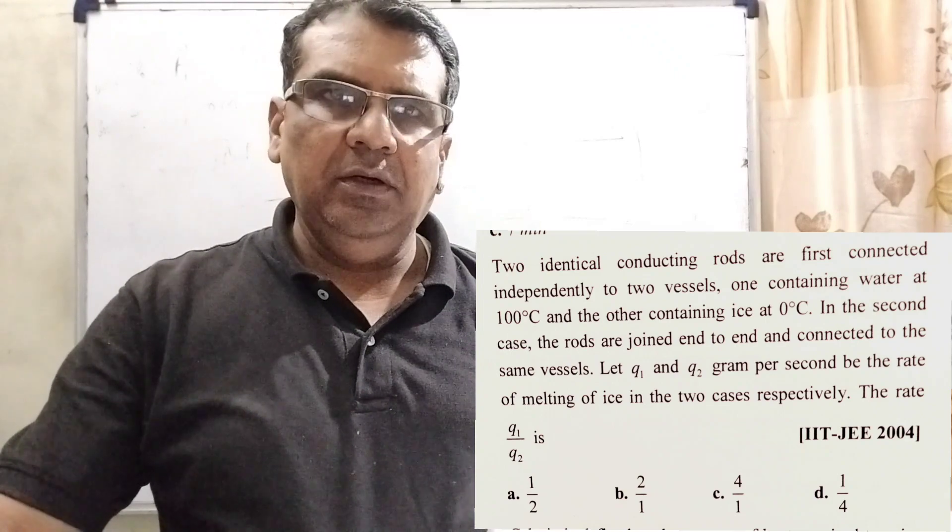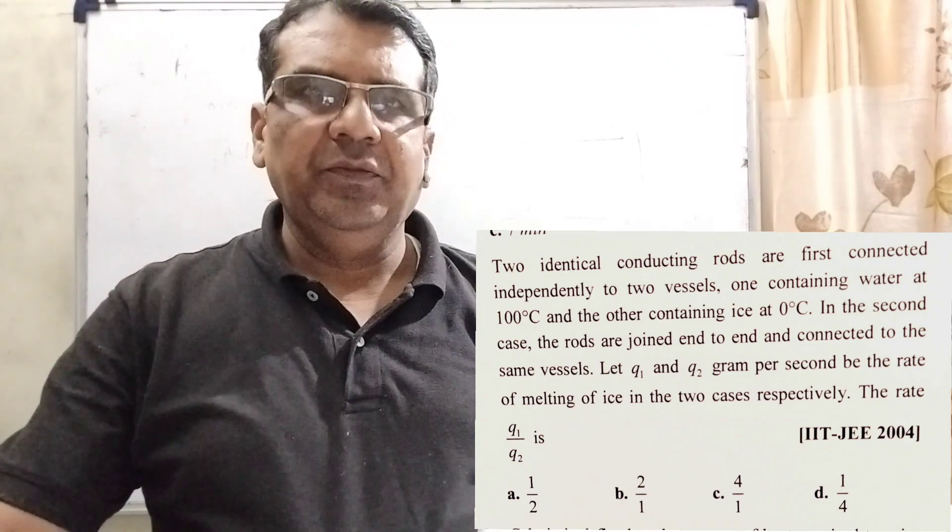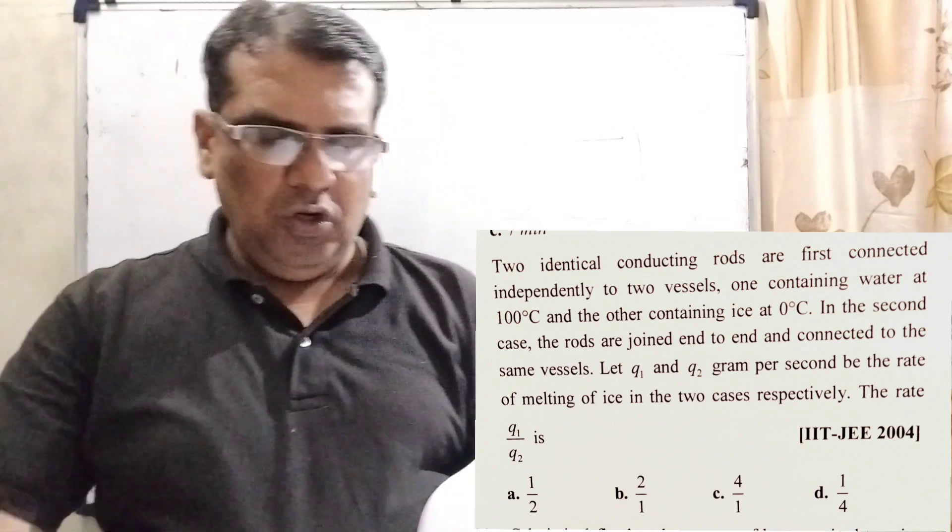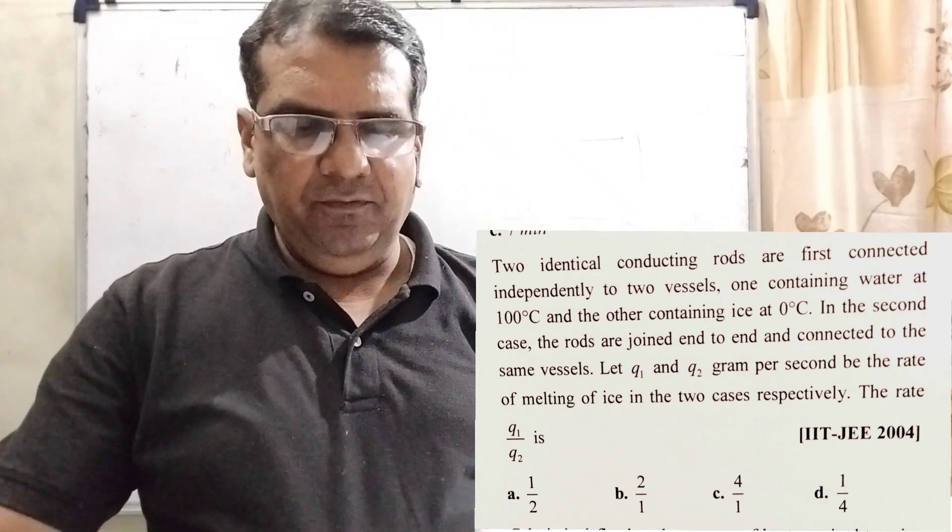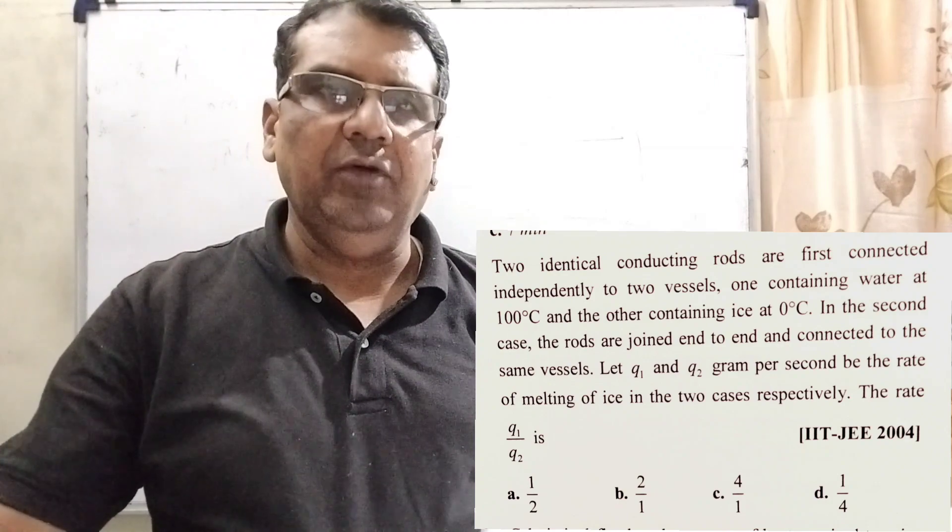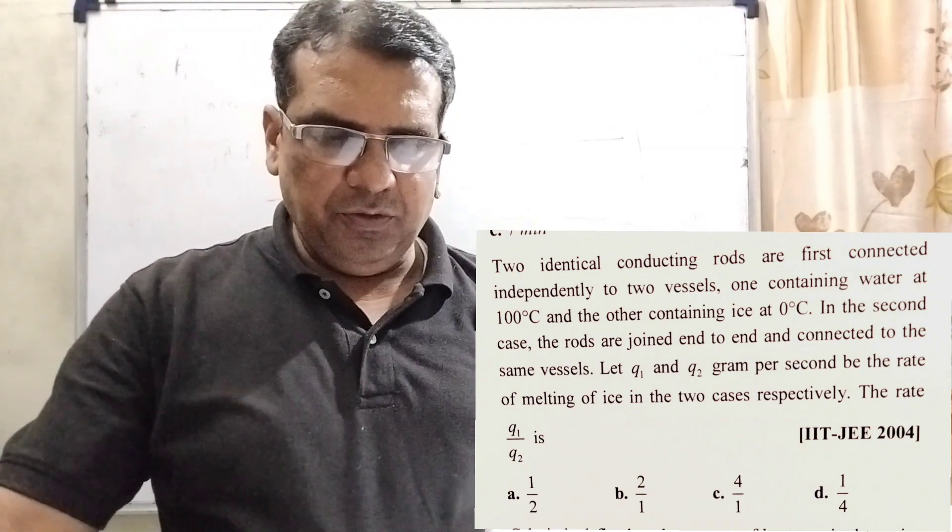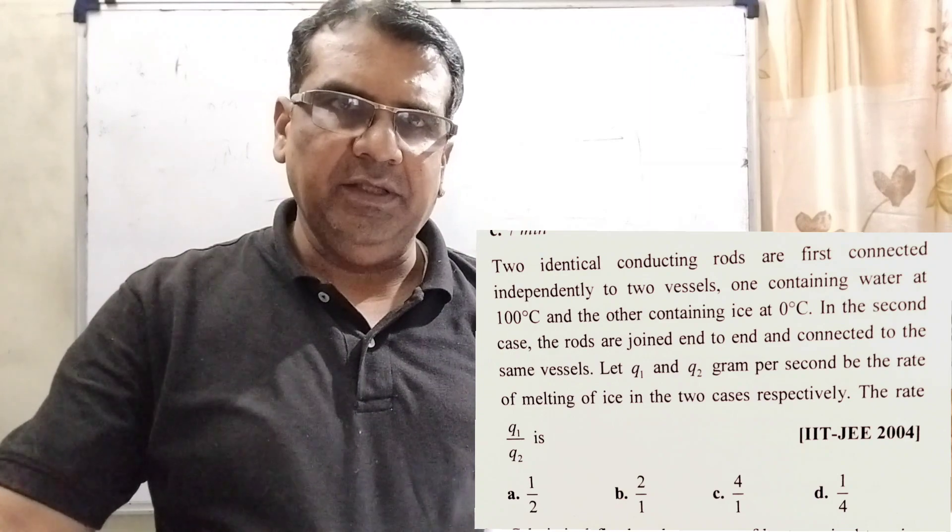The rate Q1 to Q2 is, here we have given four options. Option A, 1 by 2. Option B, 2 by 1. Option C, 4 by 1. Option D, 1 by 4. And this question is asked in IIT-JEE 2004 mains.